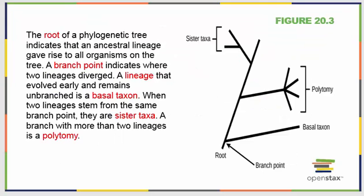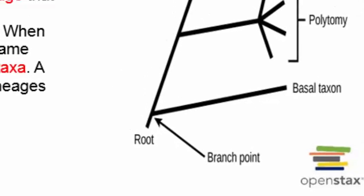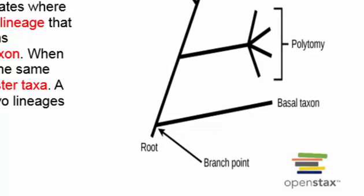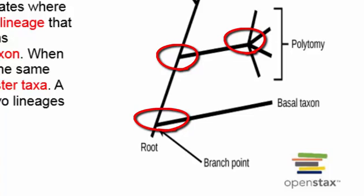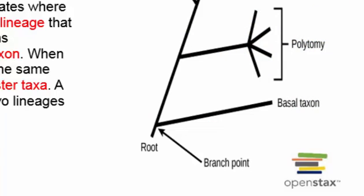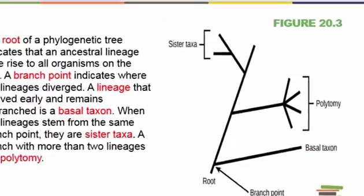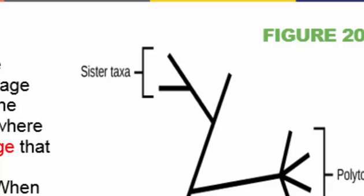We're going to focus on that rooted tree. The root of a phylogenetic tree indicates a potential common ancestor and is the oldest organism on the tree. The branching points are placed when two lineages have diverged from one another — you can think of the branch points like speciation events. One line or species branches into two or more species after that branch point. If the line has branched off relatively early and hasn't changed much since its original speciation event, we call it a basal taxon. When two species have diverged off of one branch, we refer to those as sister taxa.